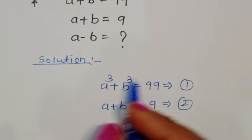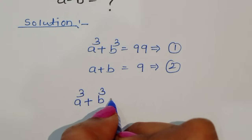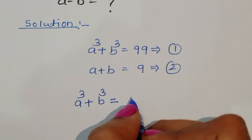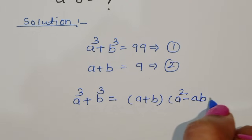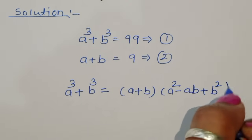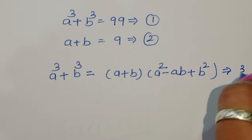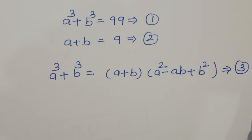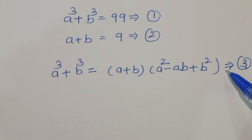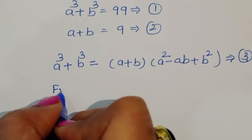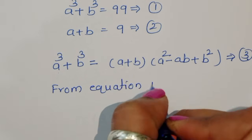We can see that the expression a cube plus b cube matches a known algebraic formula. The formula for a cube plus b cube is: a plus b, times a square minus ab plus b square. This is equation number 3. Now from equation 1 and equation 3, we can substitute values.